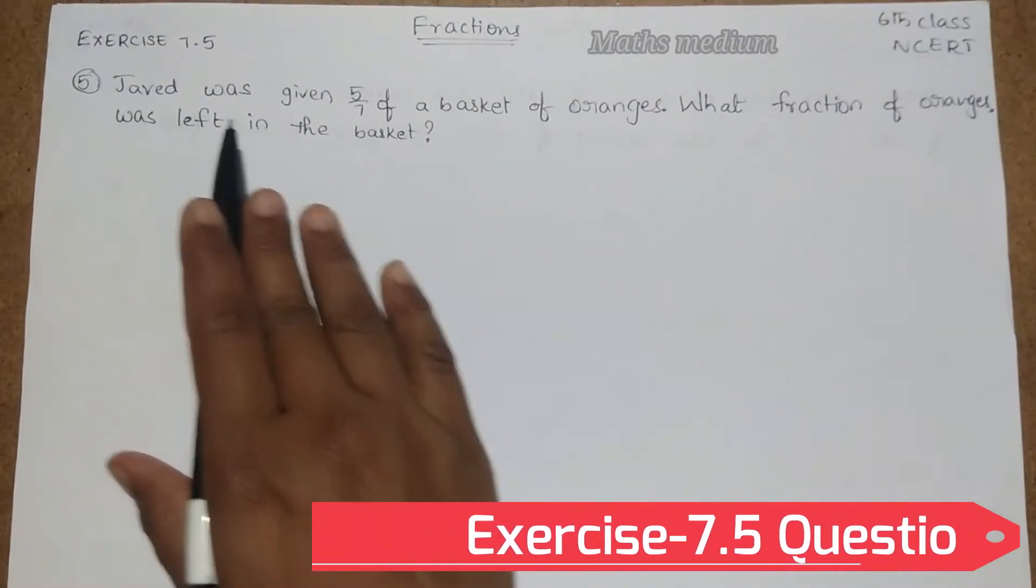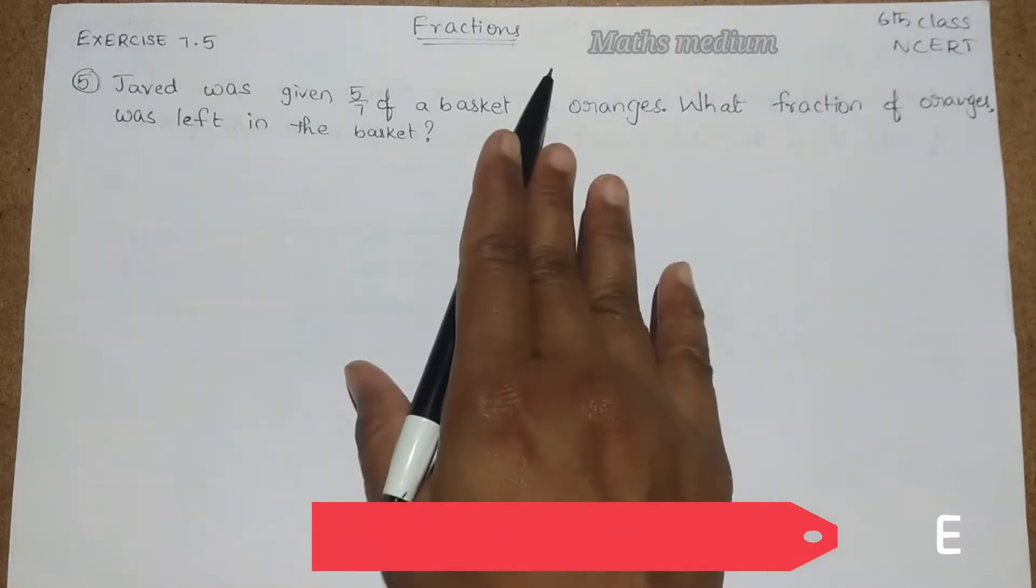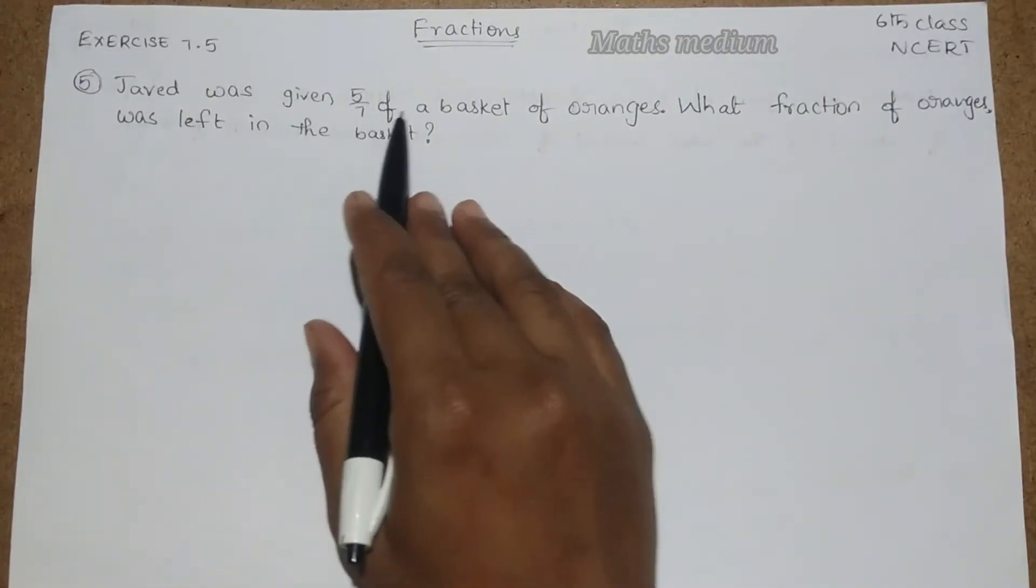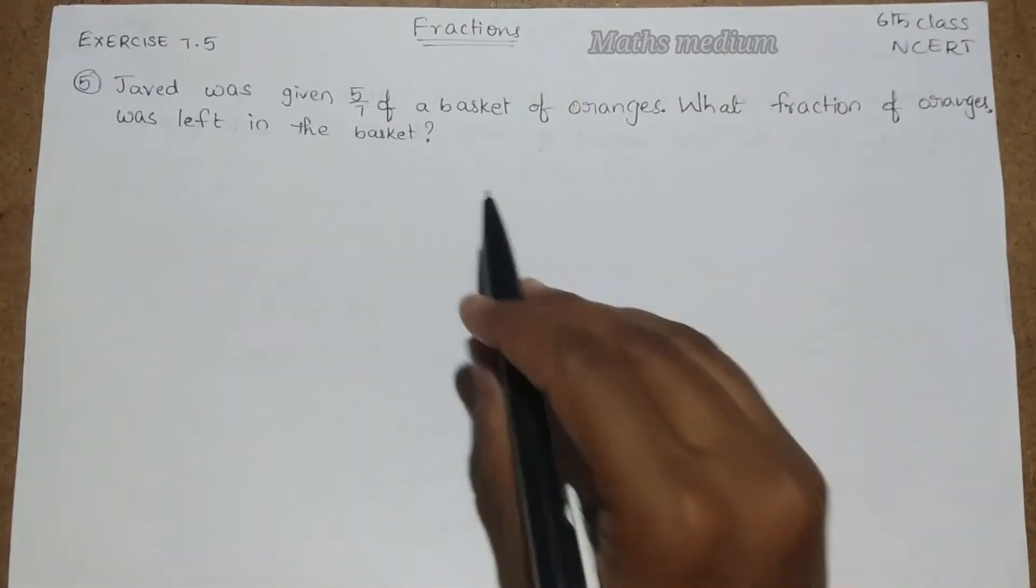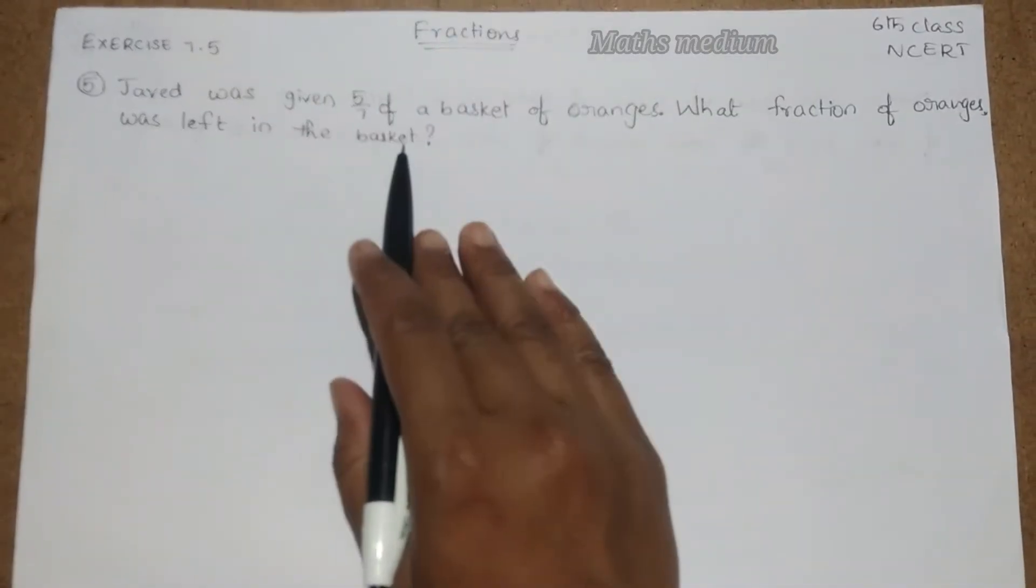See this question. Javed has a basket of oranges. He gave 5 by 7 of the basket of oranges to his friend. What fraction of oranges was left in the basket?